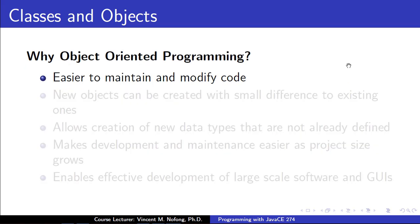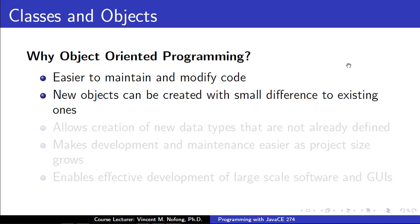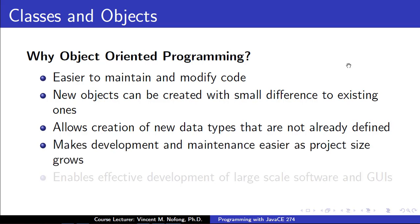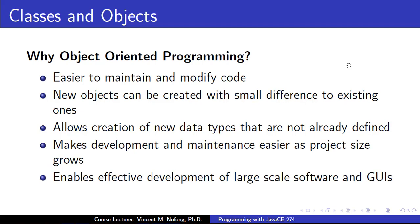Writing our codes using the object-oriented approach comes with several advantages. For example, it will enable us to maintain and modify our codes easily with time. It will allow us to create new objects with small differences to existing ones. It allows the creation of new data types not already defined. It makes the development and maintenance of projects easier as the size of projects grow, and it enables effective development of large-scale software and graphical user interfaces.